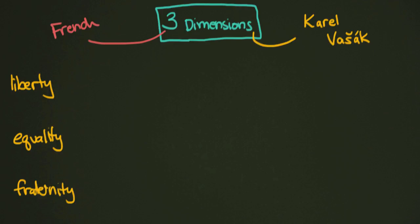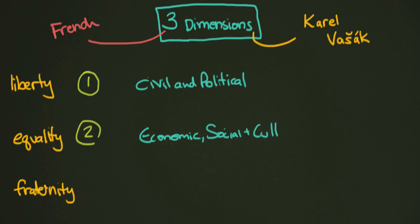And this is a simple way of remembering the three dimensions, because the first dimension is actually civil and political rights. The second dimension, these are economic, social, and cultural. So they have to do with equality.